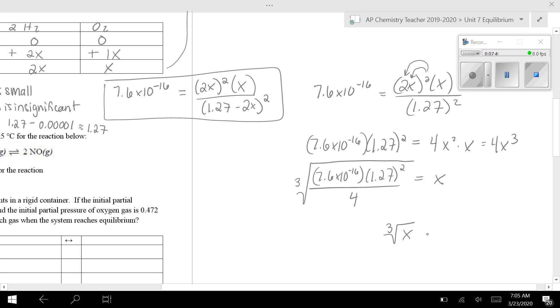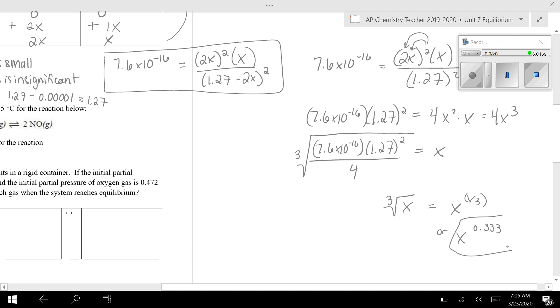the way I type it into my calculator is I type it in as X to the power of one third. Or actually, even easier is type it in as X to the point three three. Then you don't even have to worry about putting that thing in parentheses. So this is actually what I usually do. I take my number and I raise it to the power of point three three if I want to take a cube root.